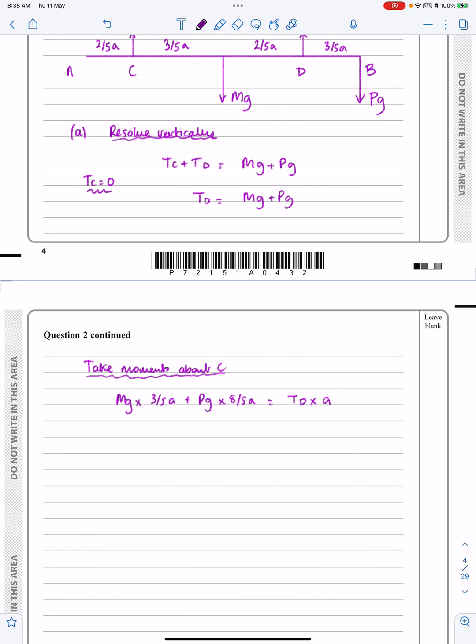Now we can immediately just cancel, let's just tidy it up, but when I'm going to be tidying it up, I'm going to cancel the G's. No, let's just cancel the A's to start off with. So I'm going to cancel that, that, and that. So I'll get 3 fifths Mg plus 8 fifths Pg is equal to Td.